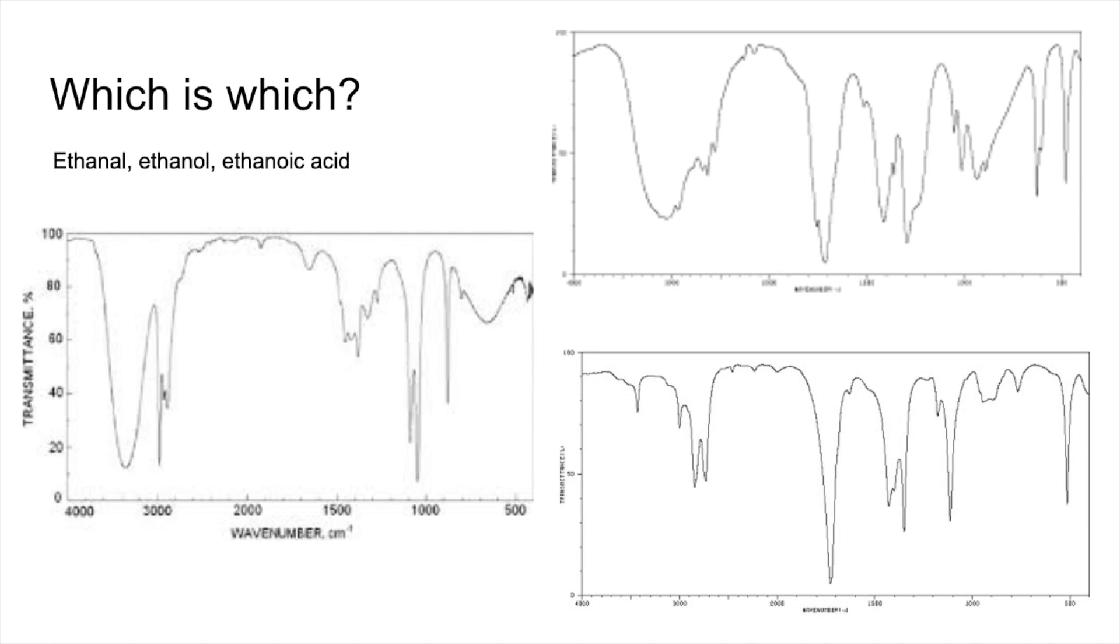You can see our options are one is ethanol, one is ethanol, and the other one is ethanoic acid. So let's see if you can with evidence assign those three spectra correctly. If you want to just pause the video, have a go at that, and then play on when you're ready for the answers.